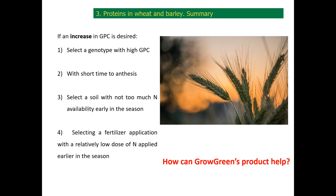To summarize, if we intend to increase grain protein content in wheat and barley, we would: 1. Select a genotype that shows high protein content. 2. Select one with a short time to anthesis, since lower assimilates will enhance protein content. 3. Select a soil with not too much nitrogen availability, especially early in the season. 4. Use a fertilizer with low nitrogen content earlier in the season. With all these parameters, how can Grow Green products help?